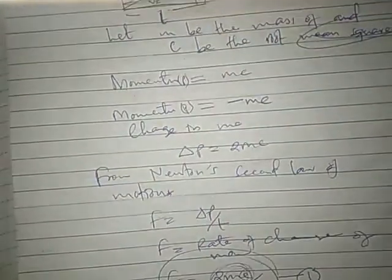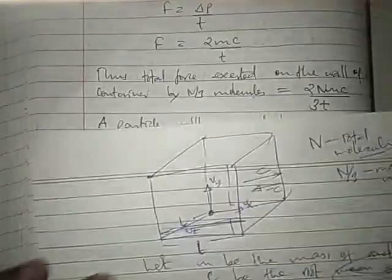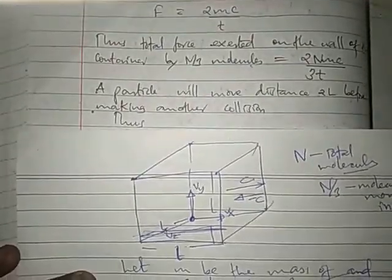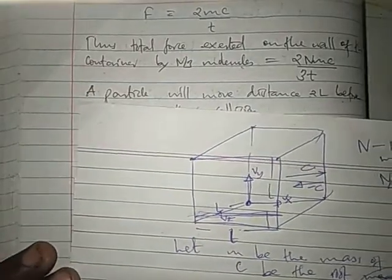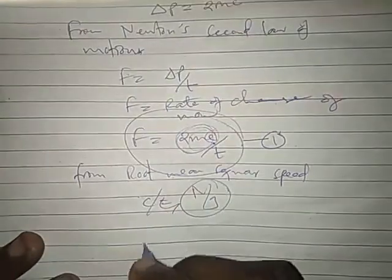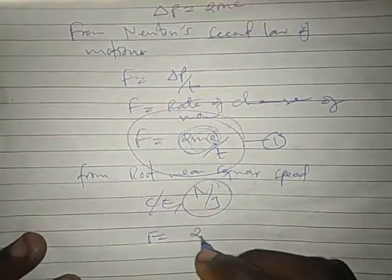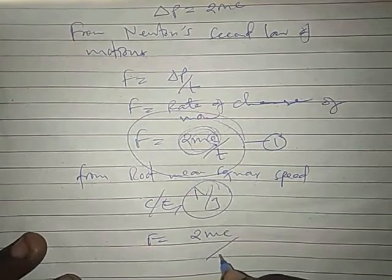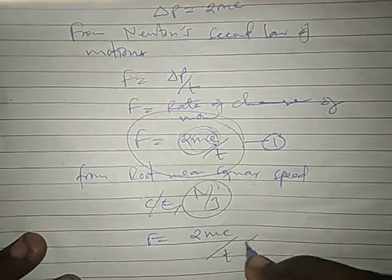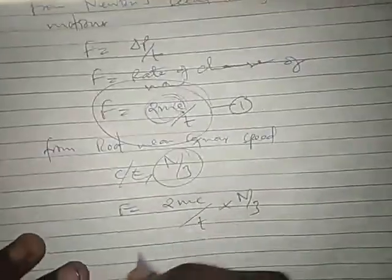So, root mean square speed will be, first regarding force, particles which are colliding here, we take N divided by 3 particles. So, this force will be for N divided by 3 particles.